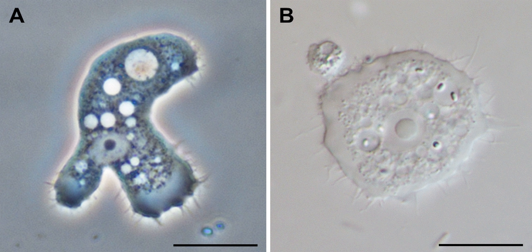Discosian amoebae lack hard shells, but some, like Cochleopodium and Chorantnevella, secrete intricate organic scales which may cover the upper surface of the cell. No species have flagella or flagellated stages of life.